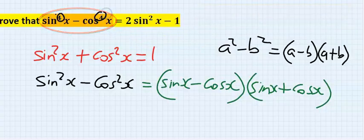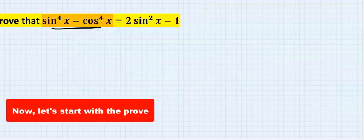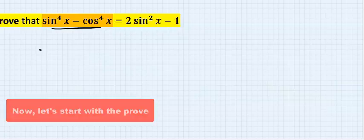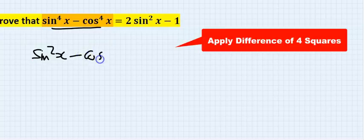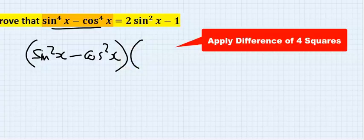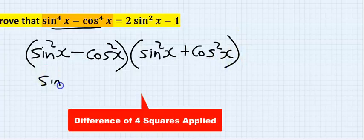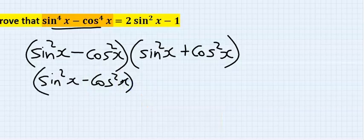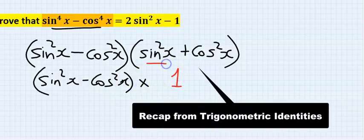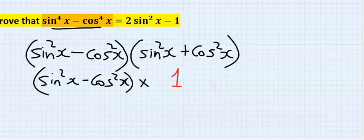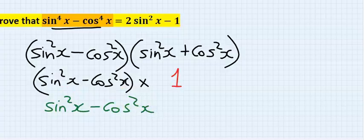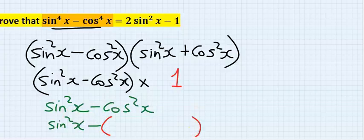This is a difference of fourth powers, so we write it as (sine squared x minus cos squared x)(sine squared x plus cos squared x). Opening the brackets, since sine squared x plus cos squared x equals one, that factor becomes one. So we are left with only sine squared x minus cos squared x.